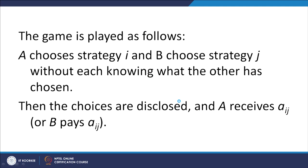The game is played as follows: A chooses strategy i and B chooses strategy j without knowing what the other has chosen. Then the choices are disclosed and A receives a_ij (equivalently, B pays a_ij). This is the same equivalent amount whether A receives a_ij or B pays a_ij.